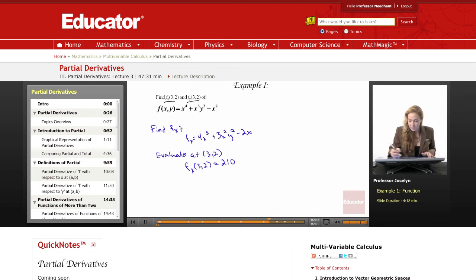Part 2 asks us to find f sub y. So find f sub y. f sub y is just going to be the derivative of our function holding x constant. So we'll have f sub y is equal to, well, for our first term there are no y's in it, so that's just equal to 0. Our second term, there's a y, so this will give us 2yx cubed. Our third term is also equal to 0. So we have 2yx cubed.